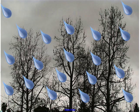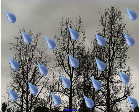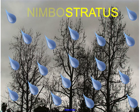When clouds have precipitation, like the one seen here, we add the word nimbus to the front of them. In this case, this is a nimbostratus cloud.